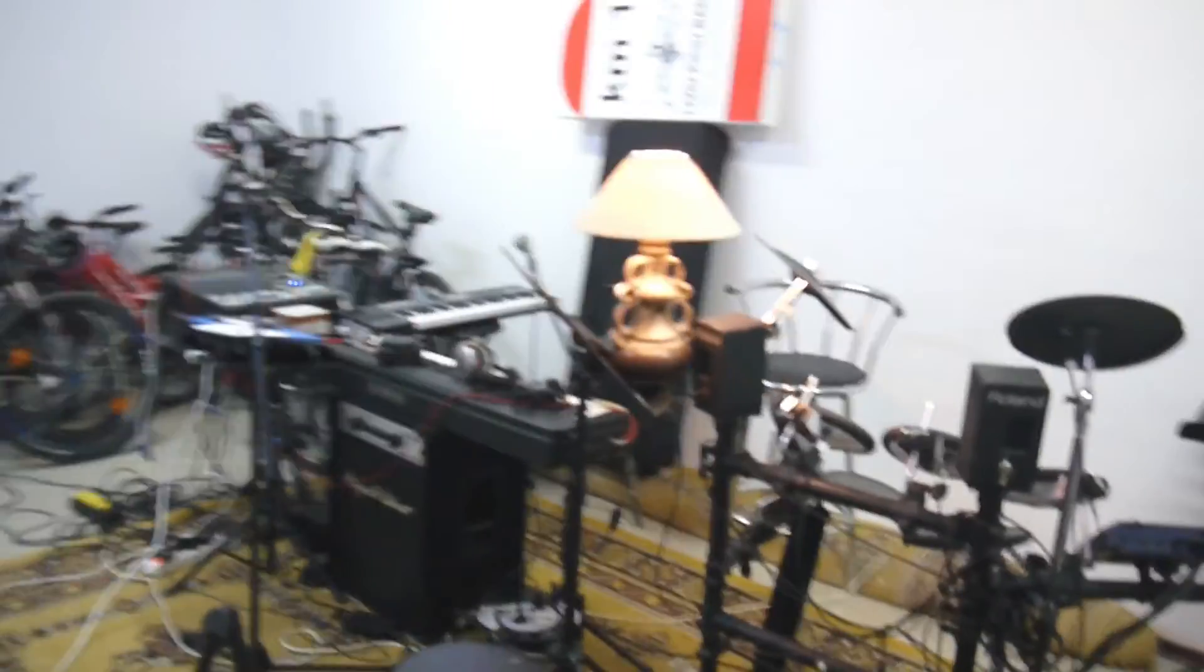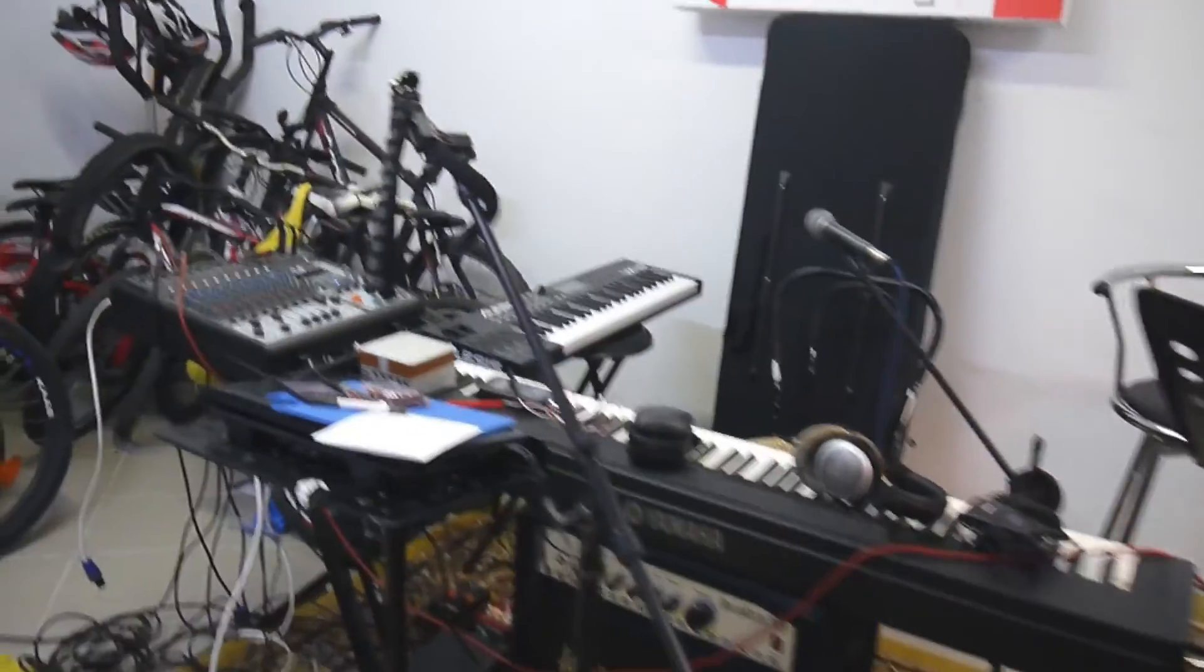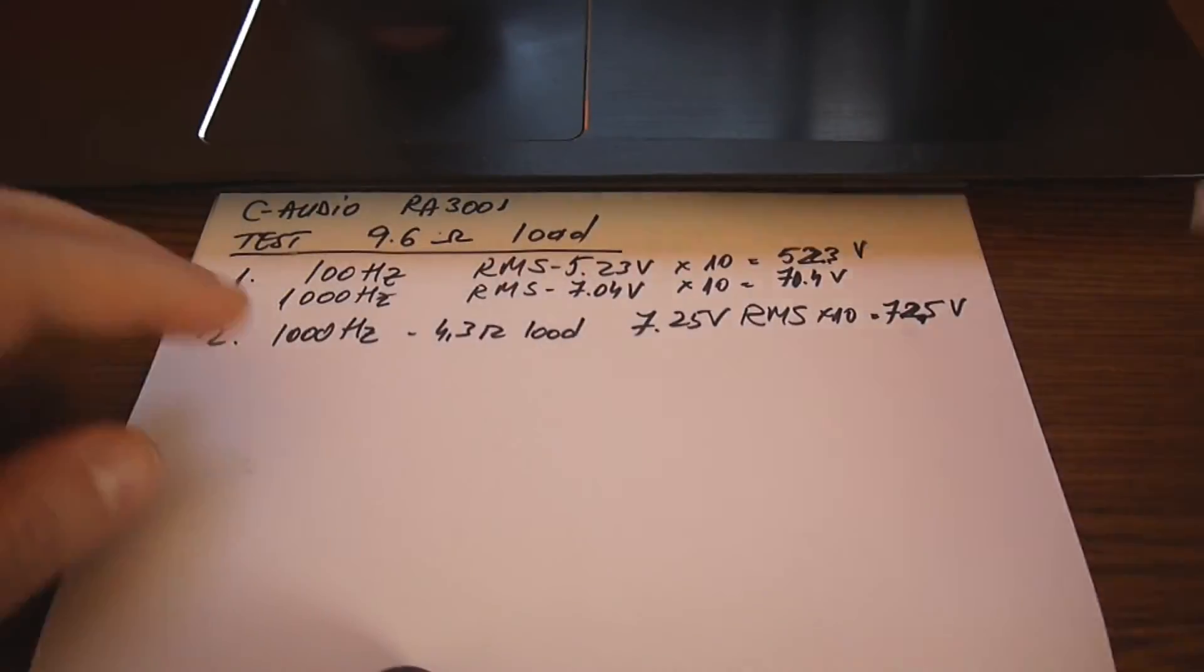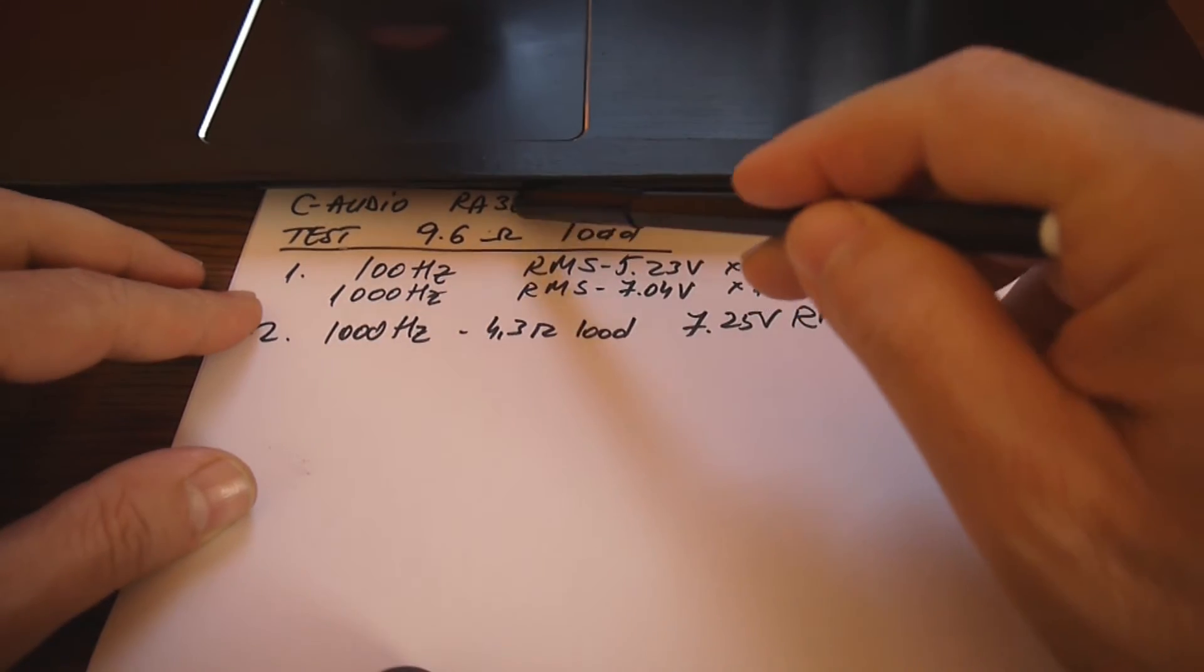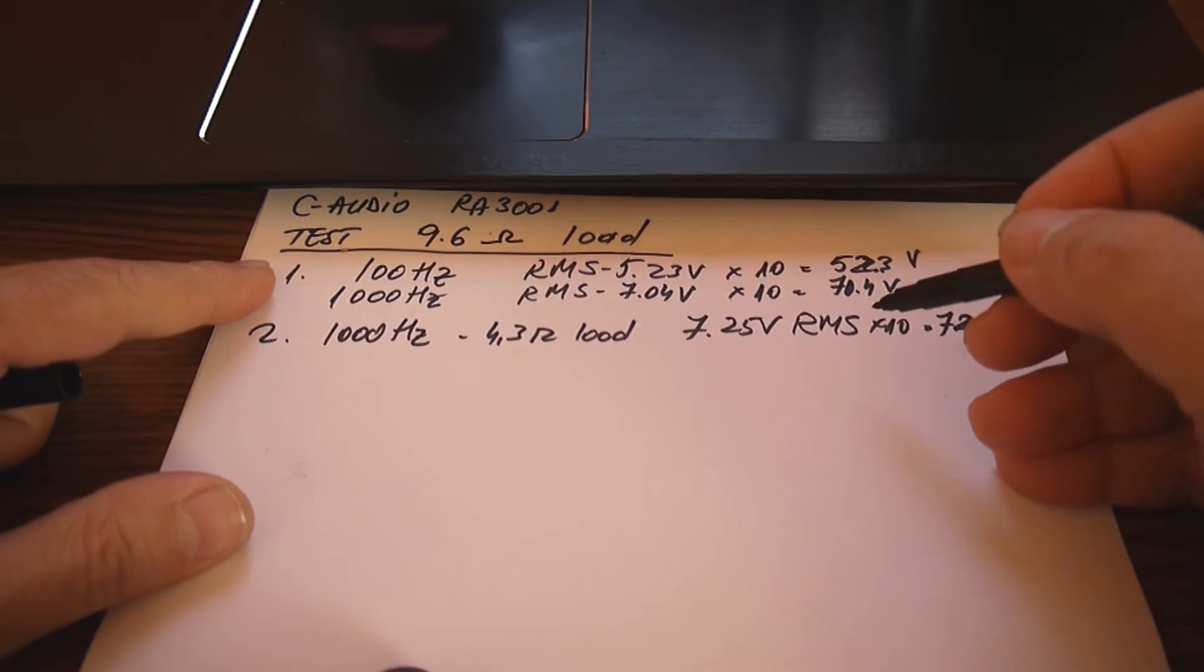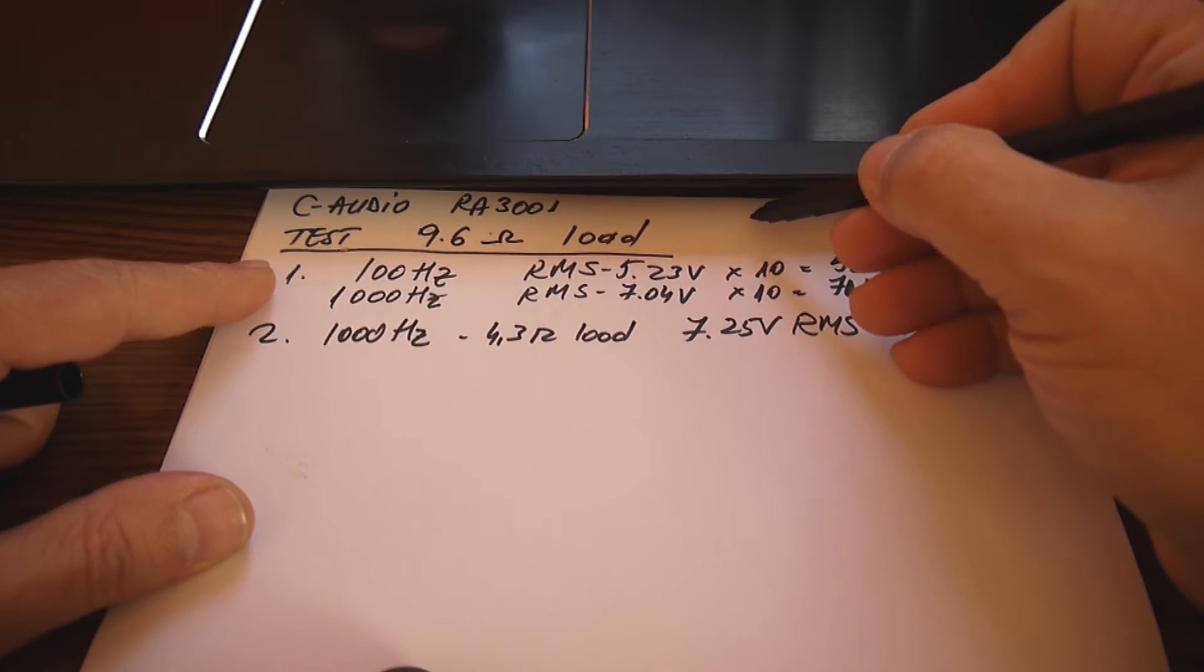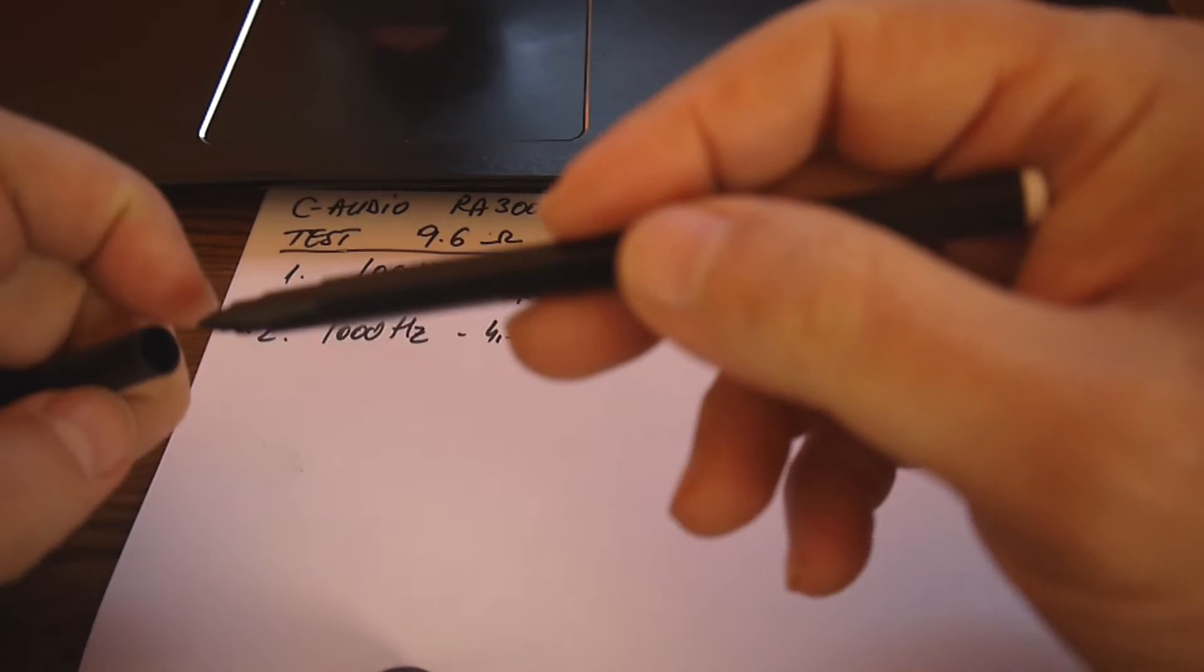I think that's it for today. I'm really curious to run the numbers. Okay, so here are the results for C Audio RA 3001 tests. We're gonna use the formula: sub power equals V squared divided by R, the load resistance.